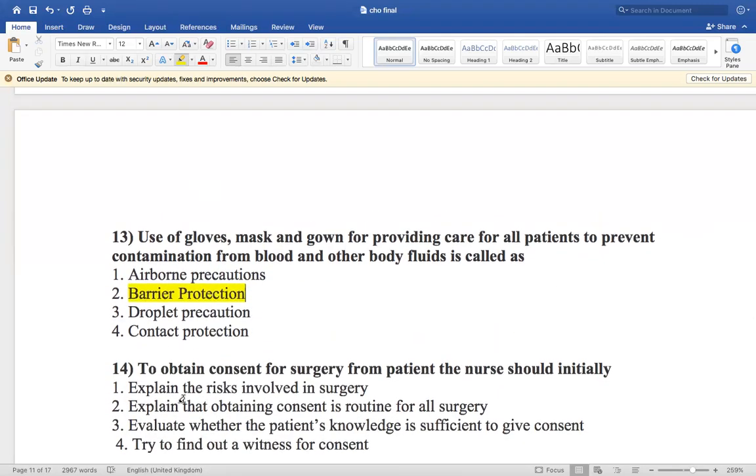Now the next question is: to obtain consent for surgery from patients, the nurse should initially explain the risk involved in surgery, explain that obtaining consent is routine for all surgery, evaluate whether the patient's knowledge is sufficient to give consent, and try to find out a witness for consent.